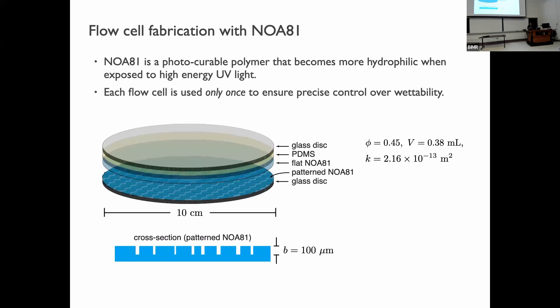Here is a typical schematic of our device. To make these microfluidic cells we use a polymer called NOA-81, a photo-curable polymer that becomes more hydrophilic when subjected to high-energy UV ozone radiation. We have a NOA-81 surface patterned with posts on top, another flat NOA-81 surface on the bottom, and we conduct fluid flow in the 100-micron gap between the two surfaces.